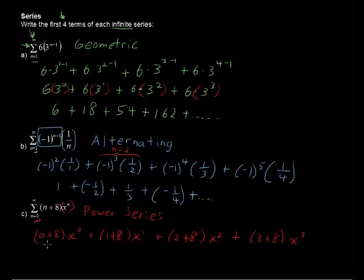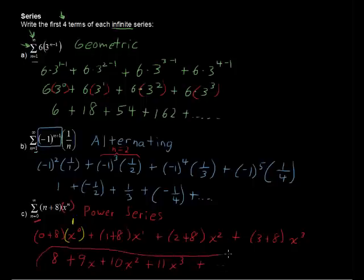Let's write these out. 0 plus 8 is 8, so 8 times x to the 0 power is just 1, so we just write 8 there. So 8 plus 9x plus 10x squared plus 11x to the third and so on. That would be your power series, always starts with a constant term.